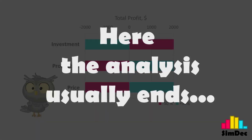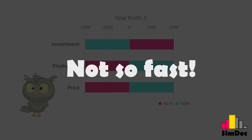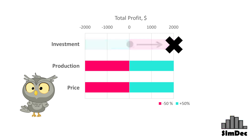And here the analysis usually ends. But let us see what happens if we fix the investment cost at the optimistic value and check the sensitivity to production and price.